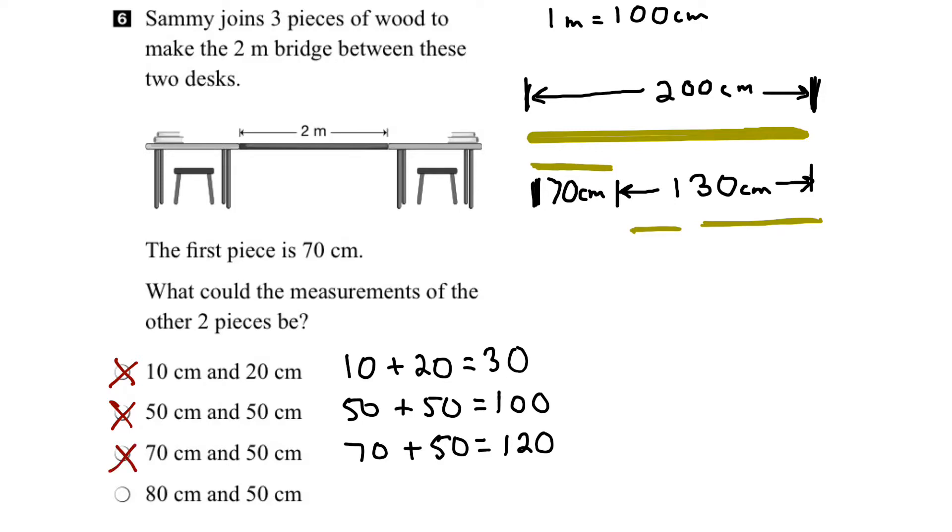So let's try the last option. 80 centimeters plus 50 centimeters. And if we add those two together, we get 130 centimeters. And that is what we're looking for. Therefore, we know that this option is correct.